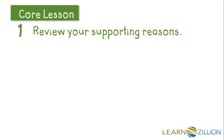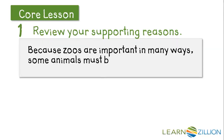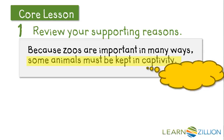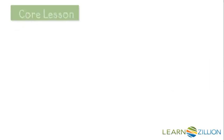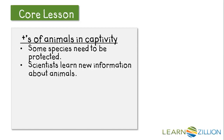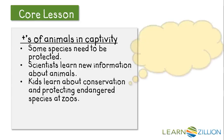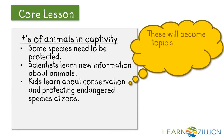So let's get started. First, I want to review the supporting reasons for my thesis. Here's my thesis statement: some animals must be kept in captivity. I need to talk about why this is true. I've listed some of the supporting reasons for keeping animals in captivity: some species need to be protected; scientists learn new information about animals; and kids learn about conservation and protecting endangered species at zoos. Each one of these bullet points will become a topic sentence for one of my body paragraphs.